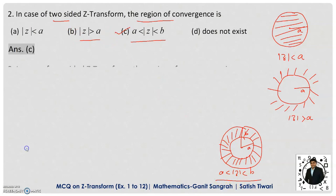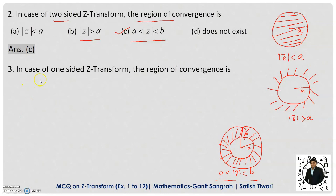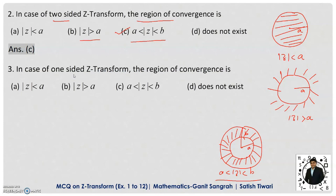Next question: In case of the one-sided Z-transform, the region of convergence is — for one-sided Z-transformation the limit runs from N equals 0 to infinity, so it will converge for |Z| greater than A. That is the region |Z| > A. Option B is correct.